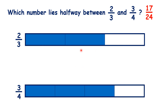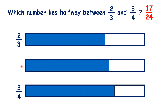And again, here we can see 2 thirds and 3 quarters, and we want the fraction halfway between them, or in the middle of them. Dividing our fraction bar into twenty-fourths gives us our answer: 17 twenty-fourths.